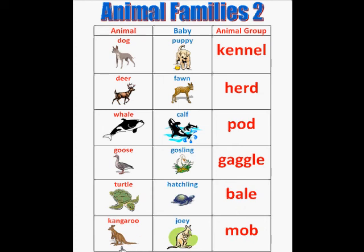Then we have a kangaroo, and the kangaroo's baby is called a joey, and the animal group is called a mob.